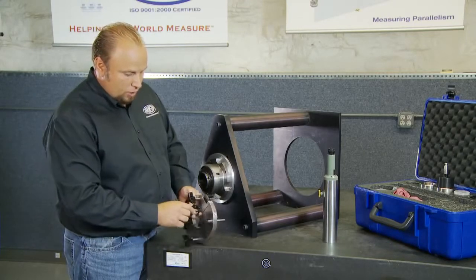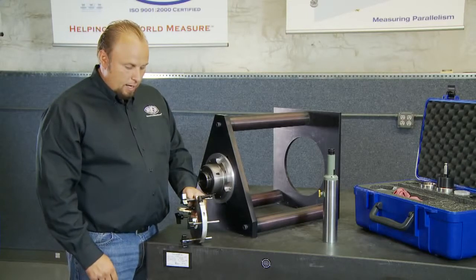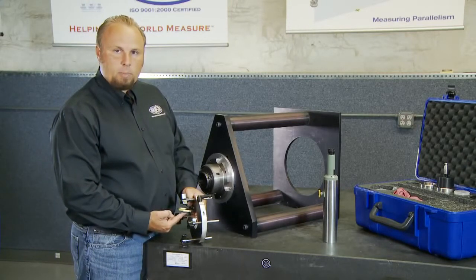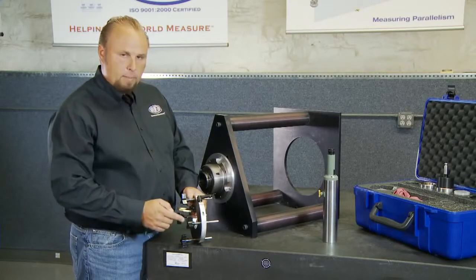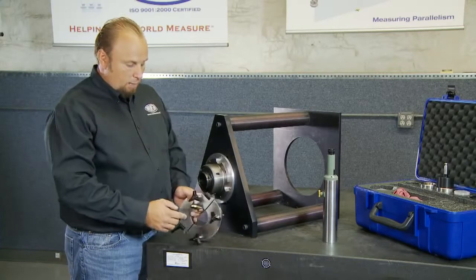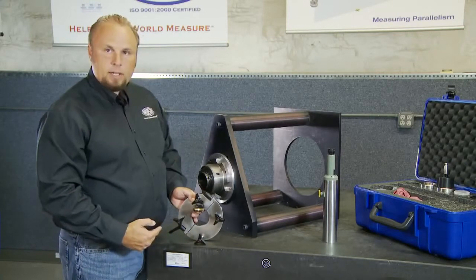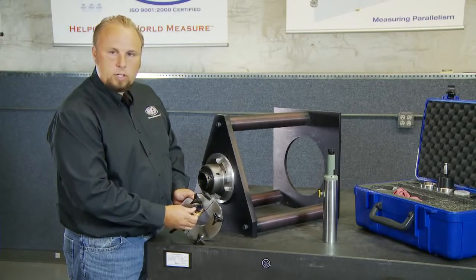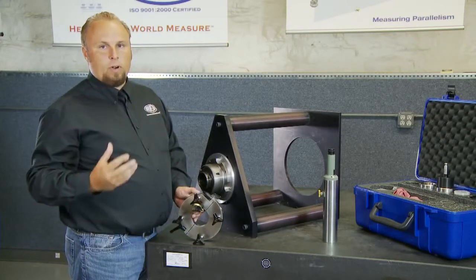There is a safety strap here that you can see, and the design behind that is to do a couple of things. Number one, position the scope in the proper orientation so that your reticle pattern, meaning your crosshairs, is in the vertical orientation and matches the cross that you can see here represented by the tangent screws. Also, the safety strap allows you to vertically mount the scope without the scope falling out.